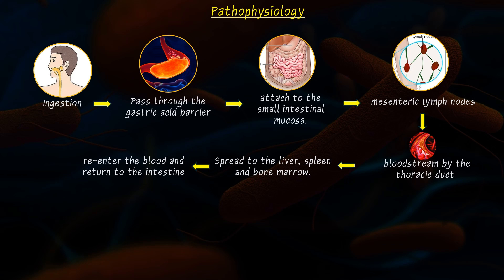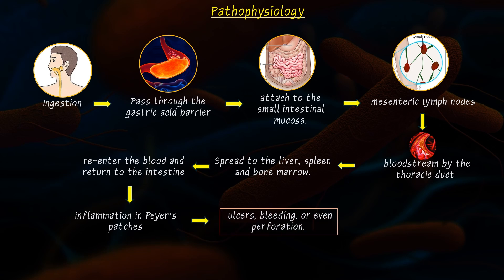Later, they re-enter the blood and return to the intestine through infected bile. In the ileum, they cause strong inflammation in Peyer's patches, which can lead to ulcers, bleeding, or even perforations.